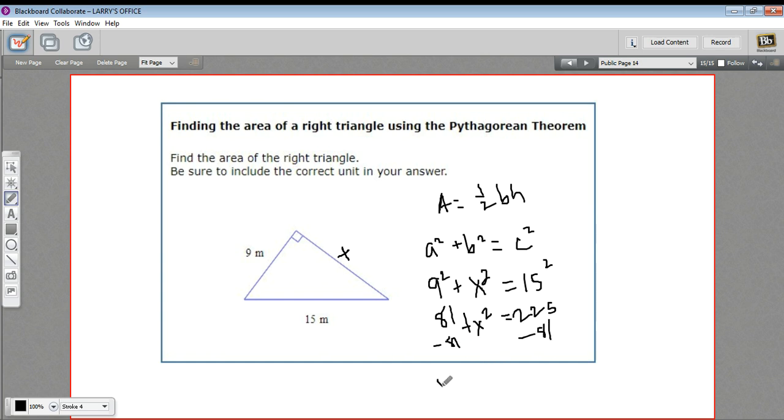I'm going to subtract 81 from both sides, and we get x squared equals 144, and that's convenient because that's a perfect square. So when we take the square root to solve for x, we get x equals 12.